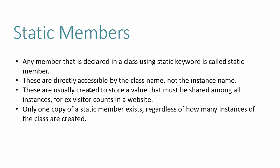Static members are usually created to store a value that needs to be shared among all instances. For example, a variable containing visitor count on a website can be made static so that across the application lifetime the visitor count is available to all instances. Regardless of how many instances of a class are created, there will be only a single copy of that static member.